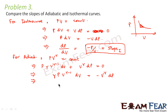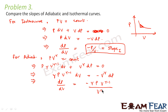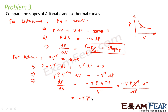Rearranging, dP/dV — which is again the slope for the adiabatic process — equals −γ·P·V^(γ−1) divided by V^γ. Simplifying, V^γ cancels with V^(γ−1), giving V^(−1), so this comes out to be −γP/V. This is the slope of the adiabatic curve.